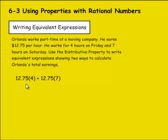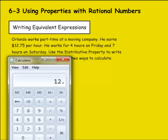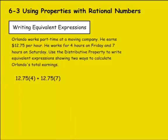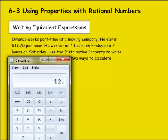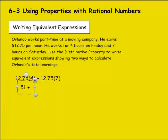So I could add these two together and get my answer. $12.75 times 4 is $51. Plus $12.75 times 7 is $89.25. Adding those together would give me a total of $140.25.